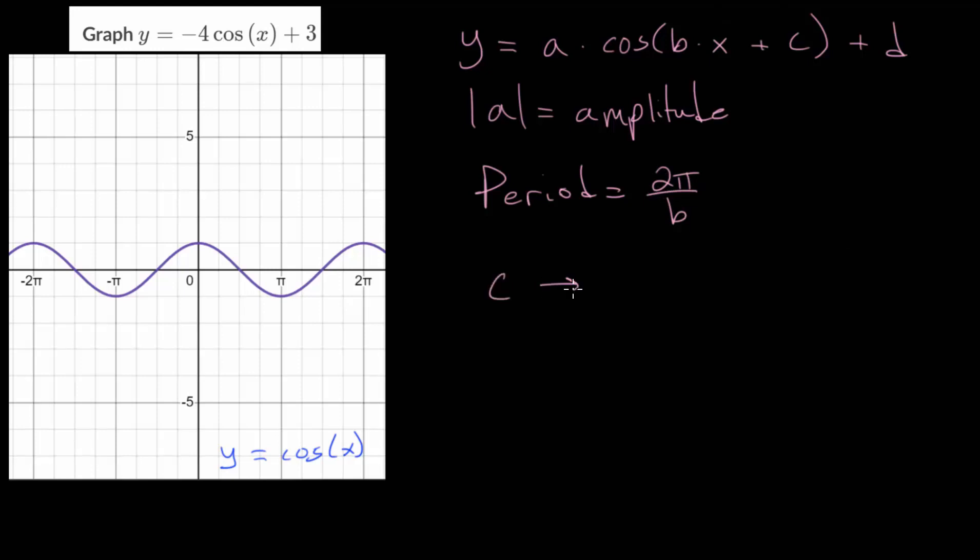c causes a horizontal shift. Honestly, c is something we will look at in later videos. For now, all of these example problems for graphing sinusoidal functions will avoid shifting horizontally since it's a little bit complicated. But it's important to know that adding to the independent variable on the inside of the function will shift it either left or right, depending if it's positive or negative. And d, this will cause a vertical shift.